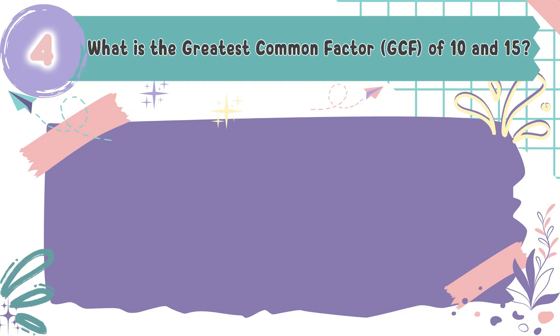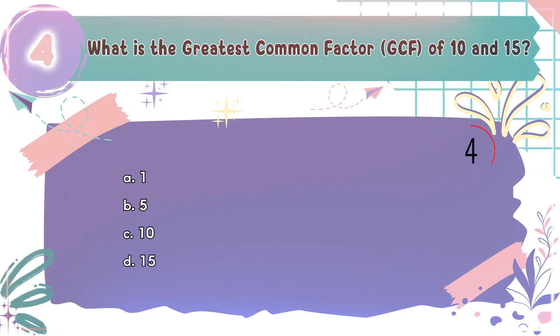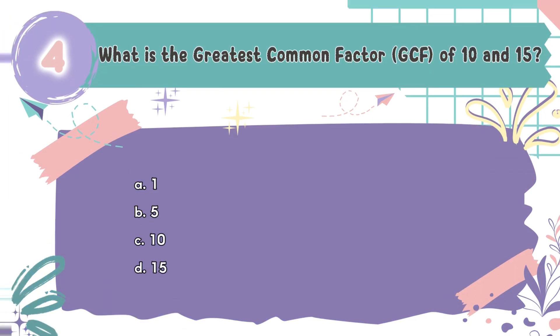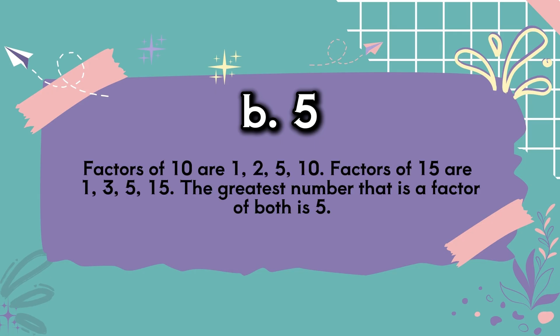Question number 4: What is the greatest common factor (GCF) of 10 and 15? The choices are A: 1, B: 5, C: 10, D: 15. The correct answer is B, 5. Factors of 10 are 1, 2, 5, and 10. Factors of 15 are 1, 3, 5, and 15. The greatest number that is a factor of both is 5.